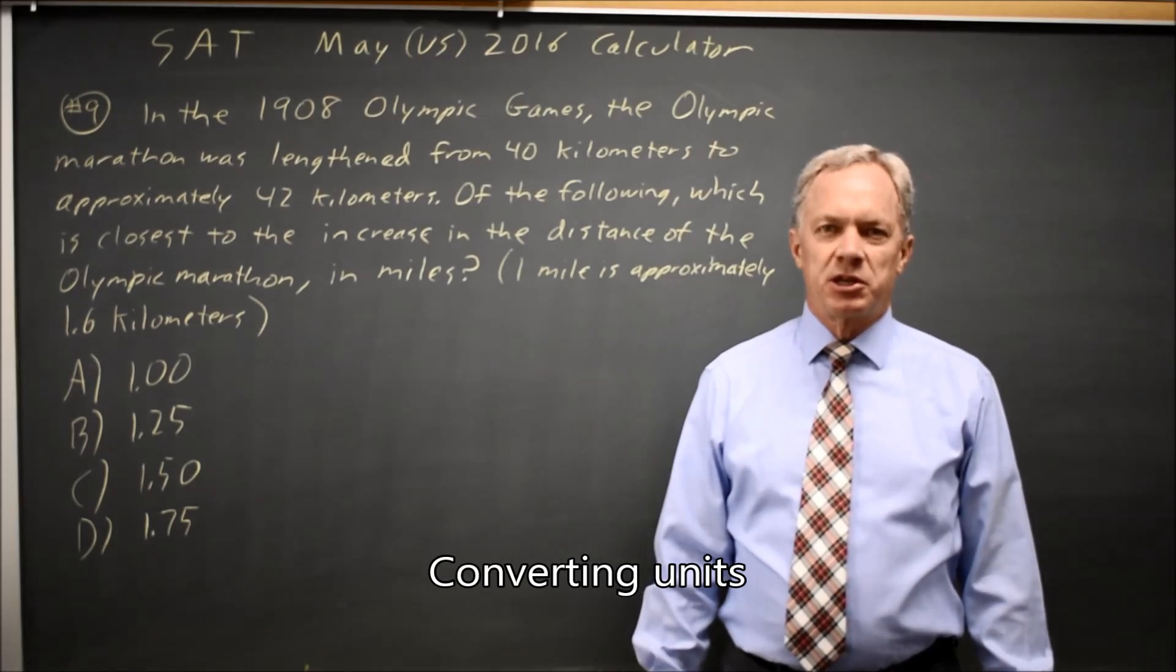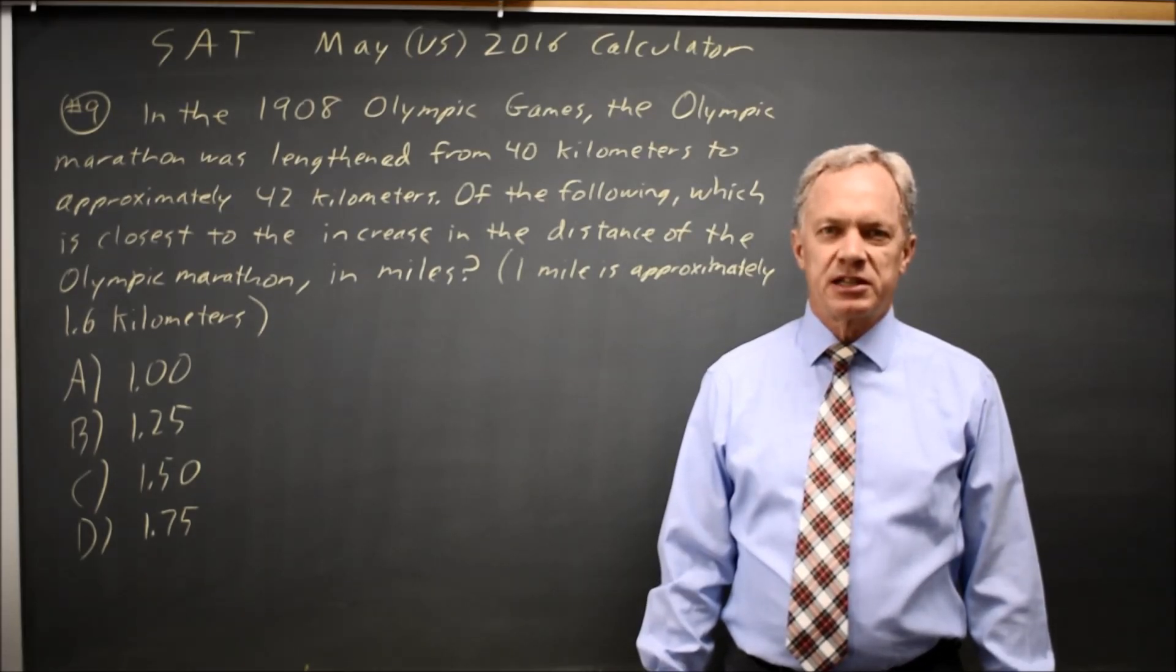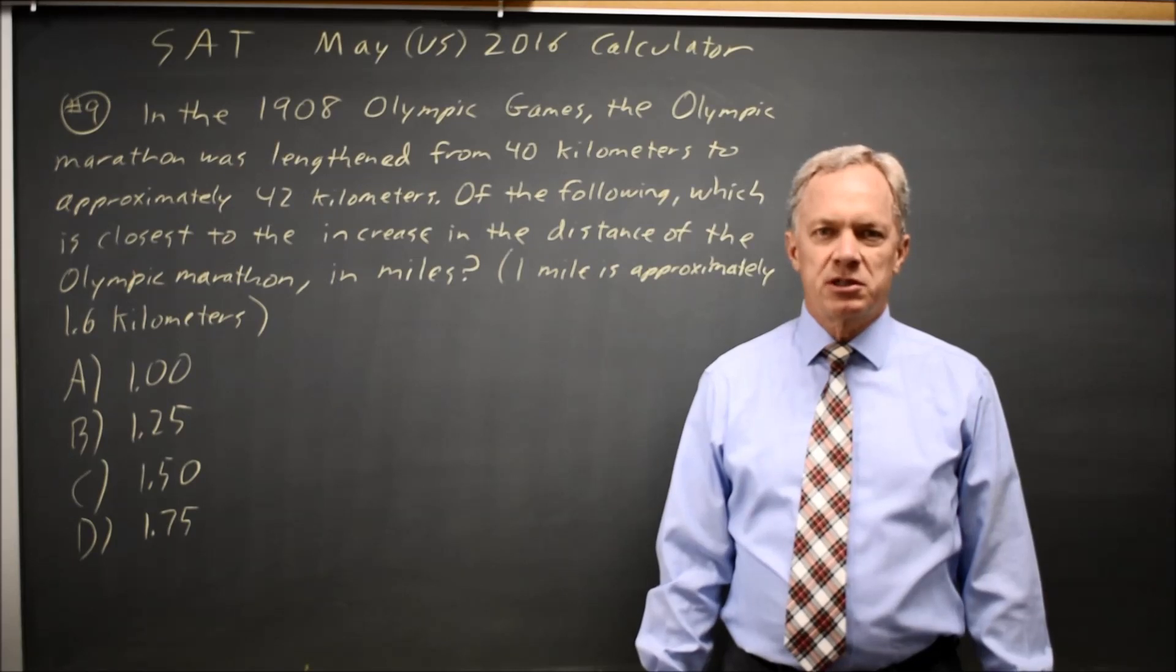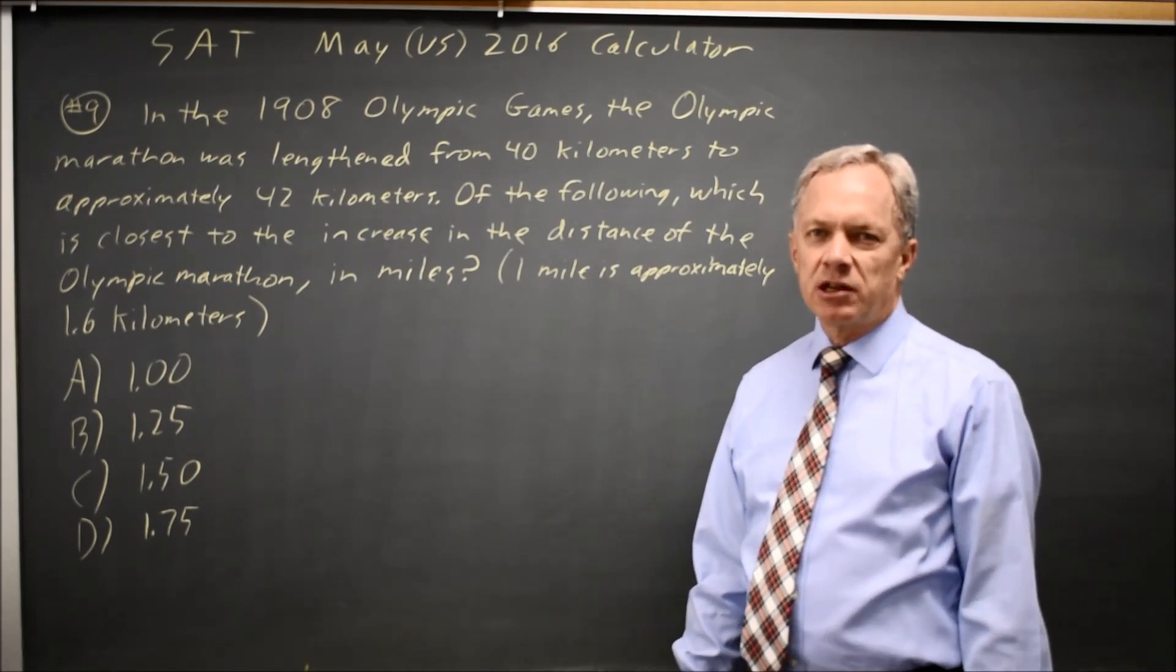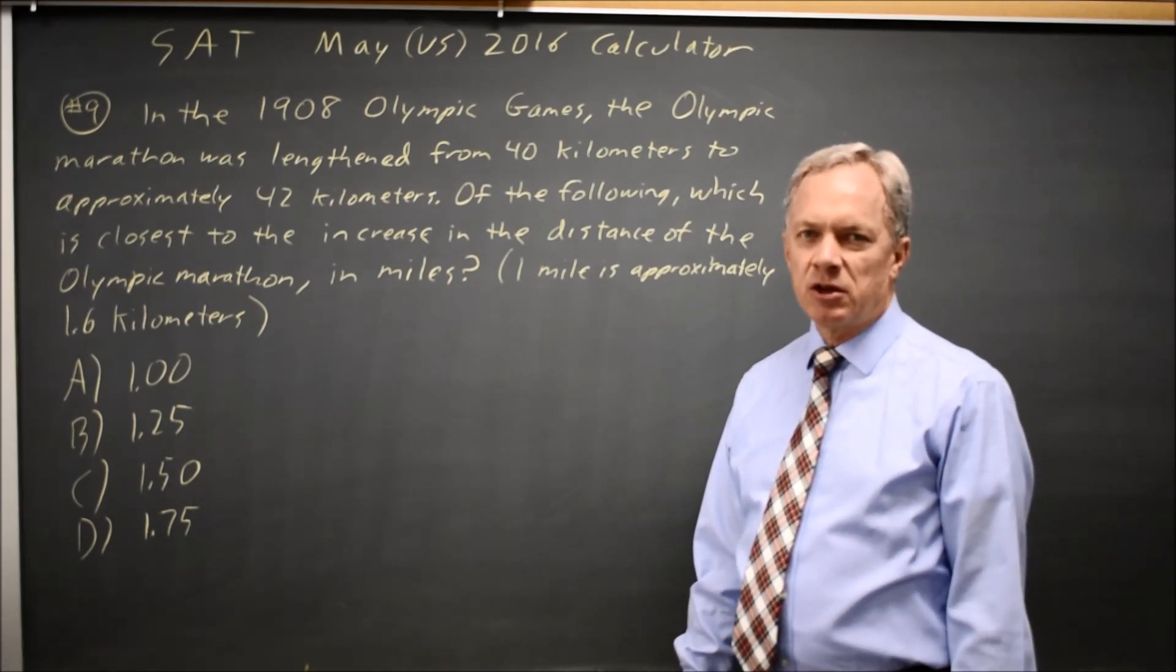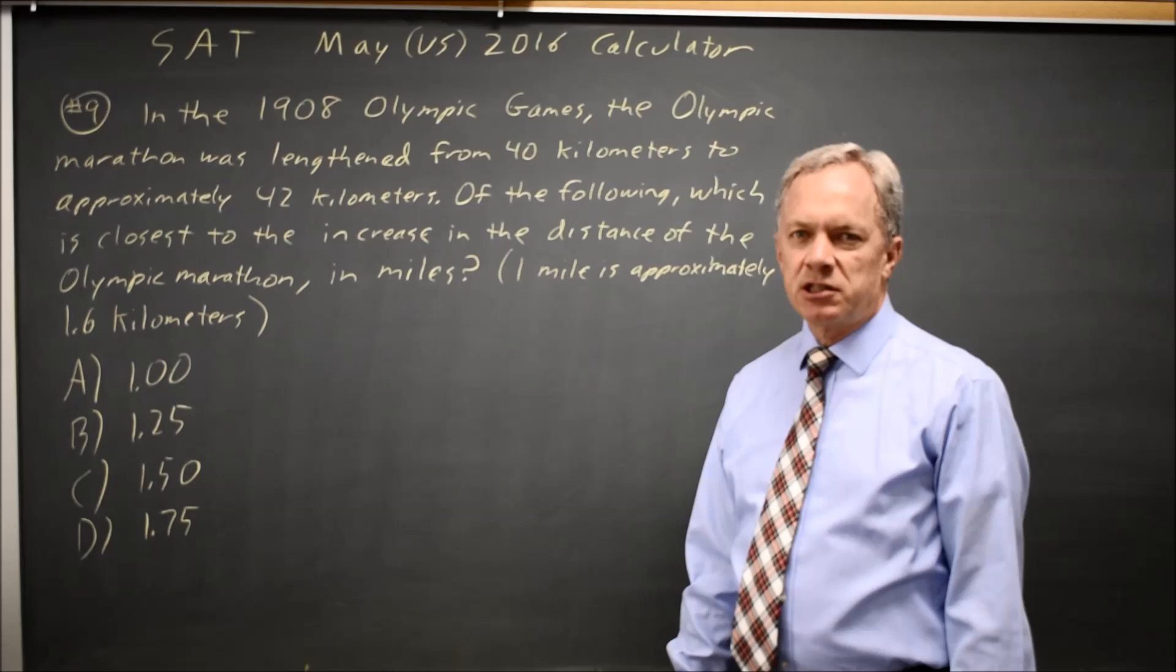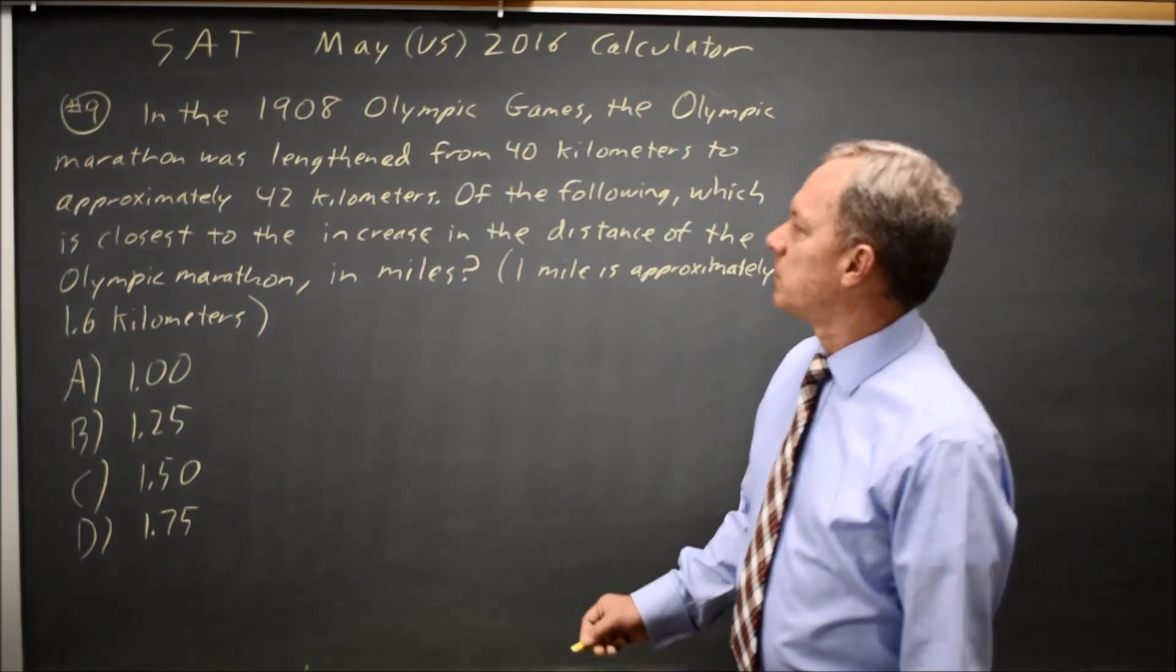This is calculator question number 9 from practice test 5 in the 2018 College Board Prep Book, which is also the main 2016 U.S. SAT exam. College Board describes the change in the Olympic marathon in 1908 and asks you to convert that change in kilometers into miles.